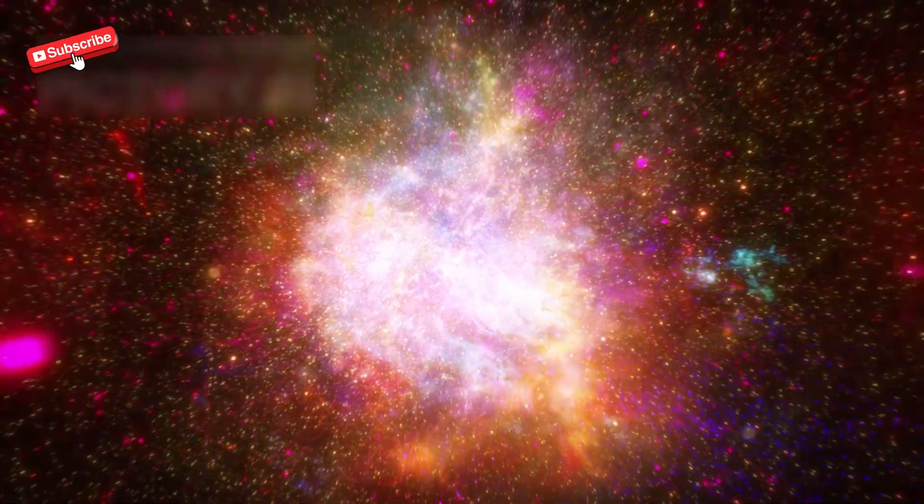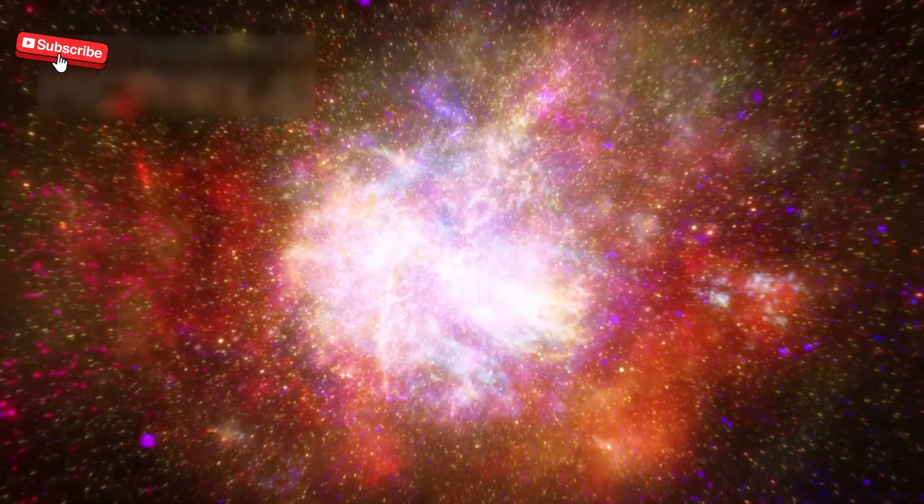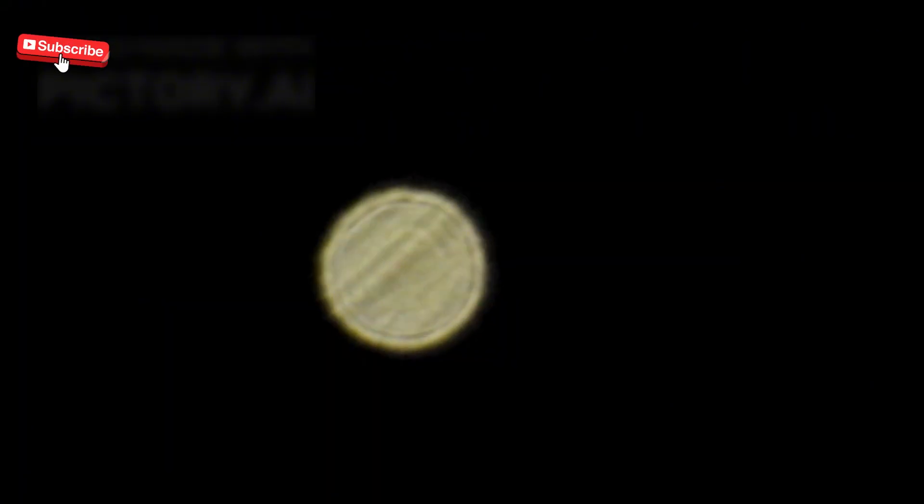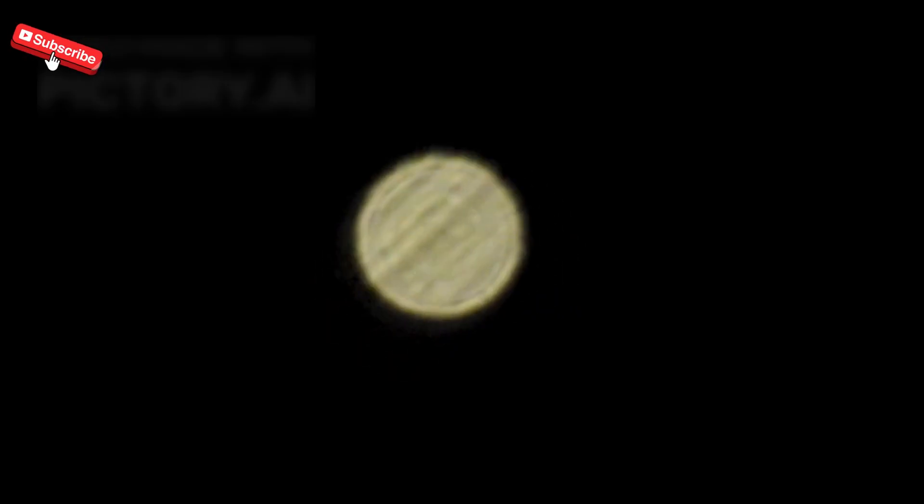What makes Betelgeuse so special is that it's a red supergiant, a star in the final stages of its life. These stars are incredibly massive and live fast, short lives compared to smaller stars like our sun. Betelgeuse is roughly 650 light years away, which might seem distant, but in cosmic terms, it's practically in our neighborhood.